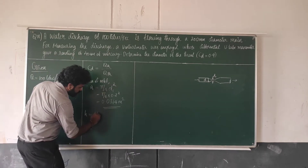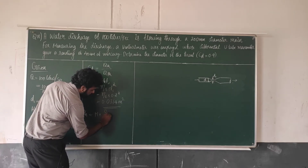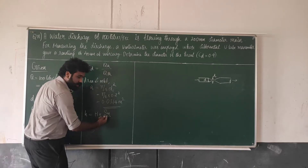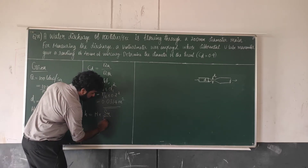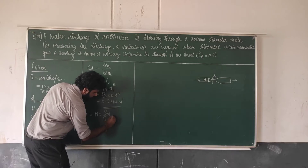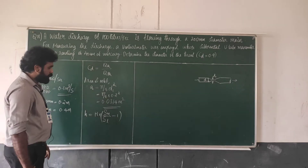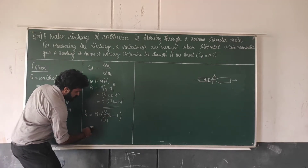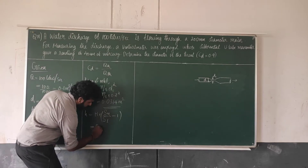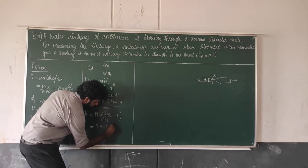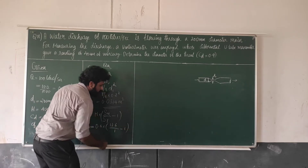H is equal to the manometer reading multiplied by the specific gravity of the heavier liquid divided by the specific gravity of the lighter liquid, minus 1. Substituting: H equals 0.4 into 13.6 divided by 1, minus 1.